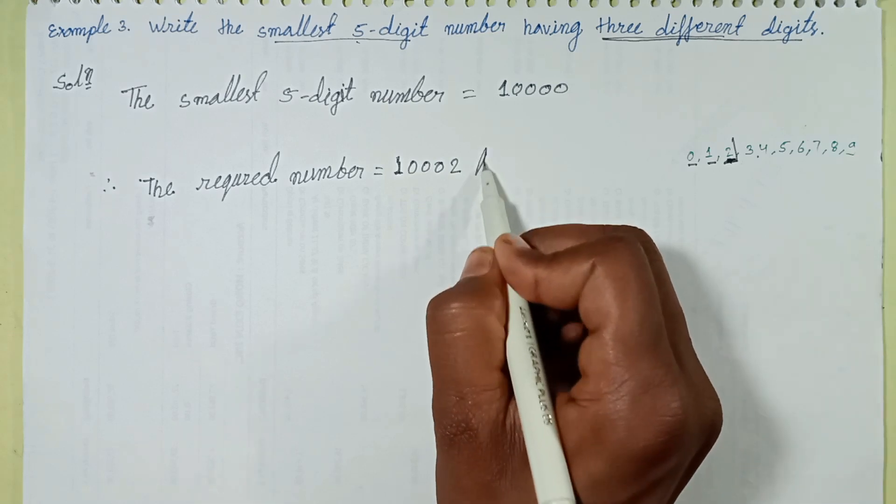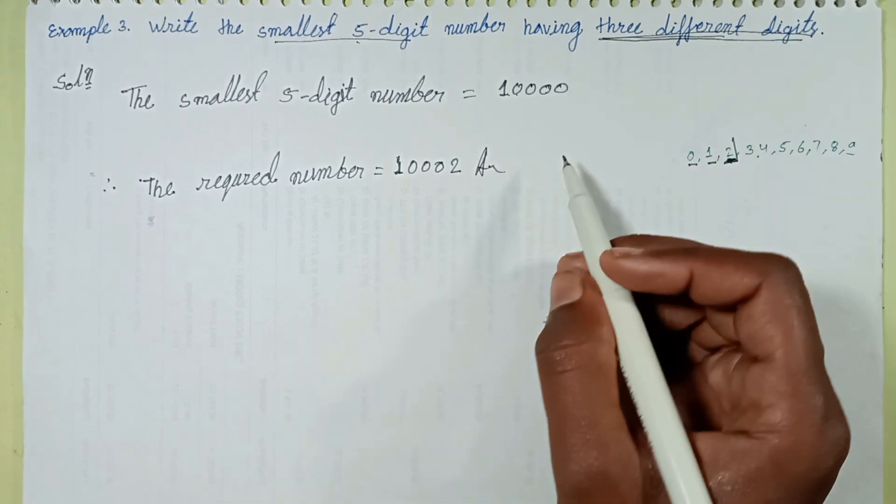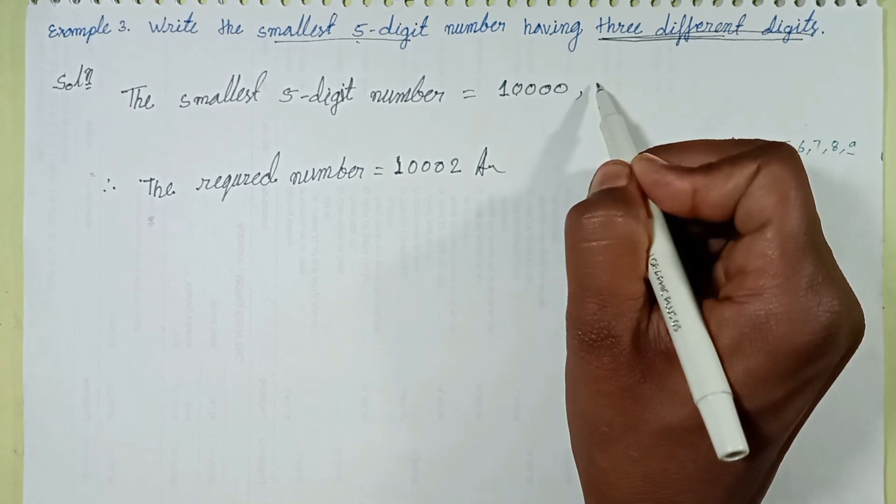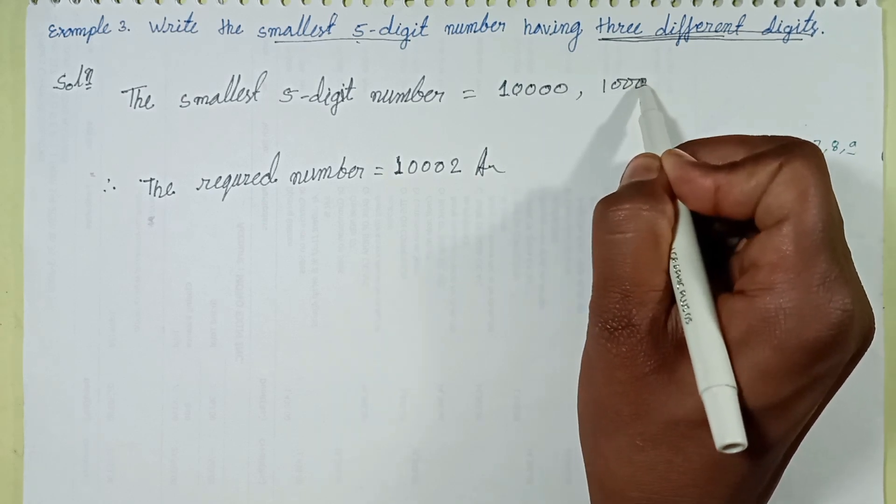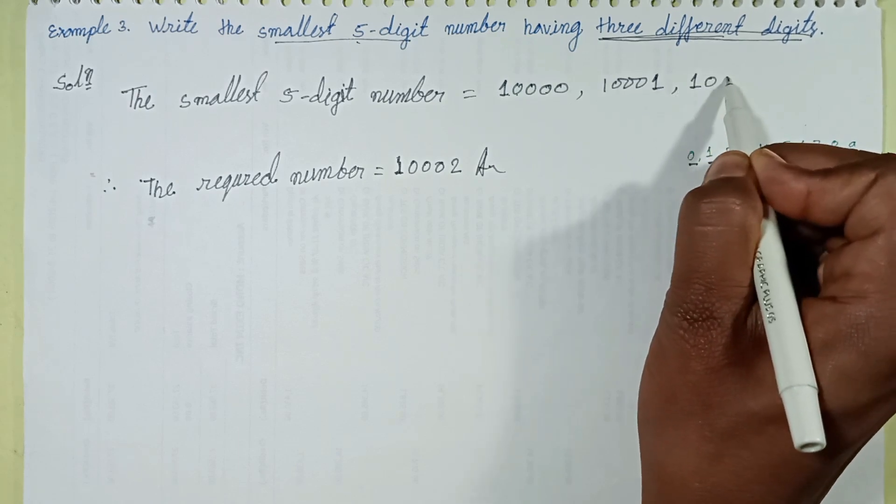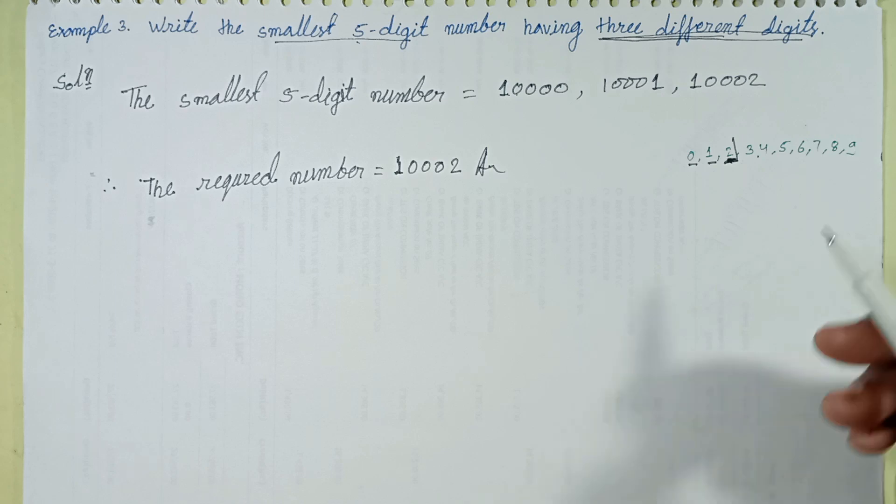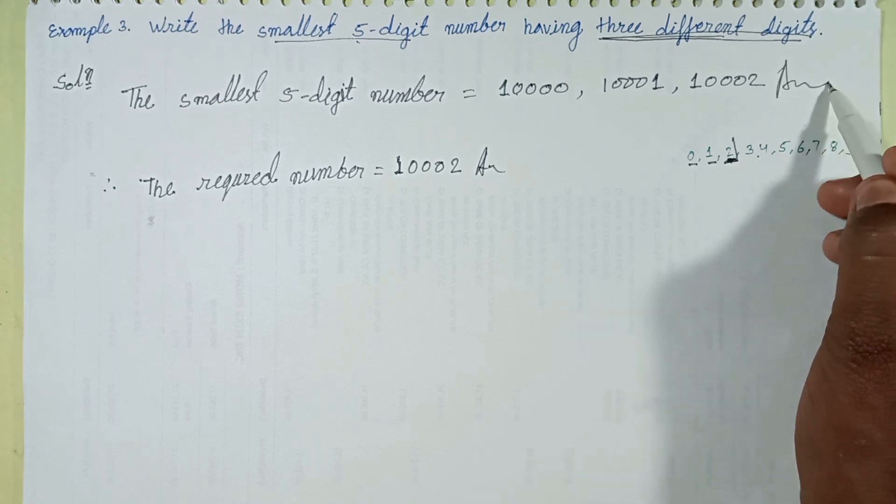This is my answer: three different digits - 1, 0, and 2. Total three different digits in the answer.